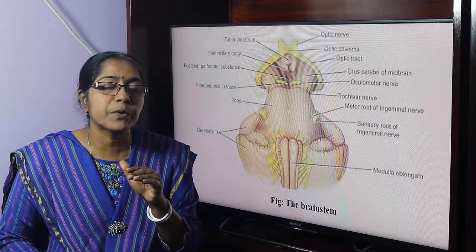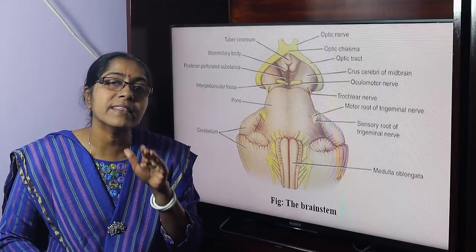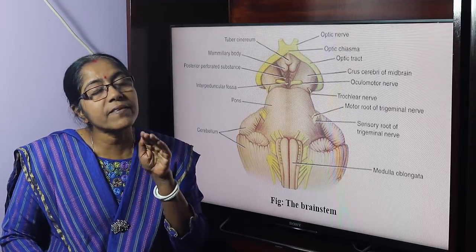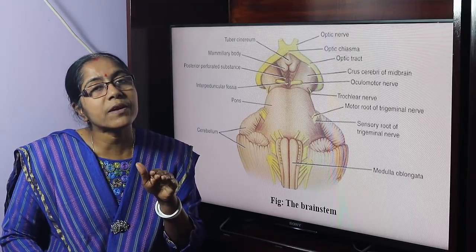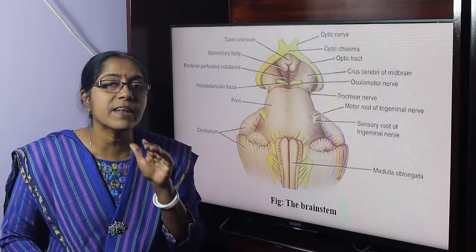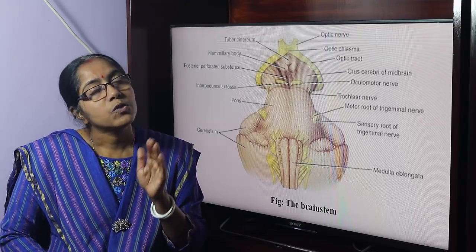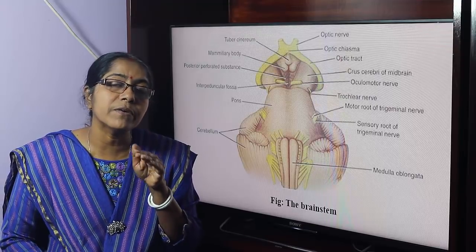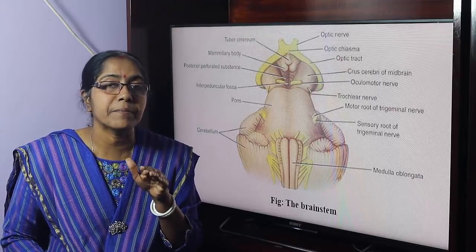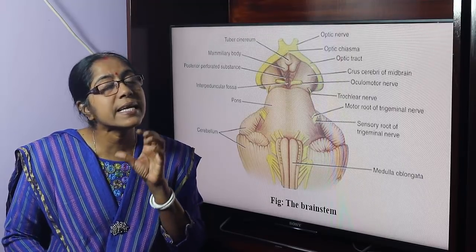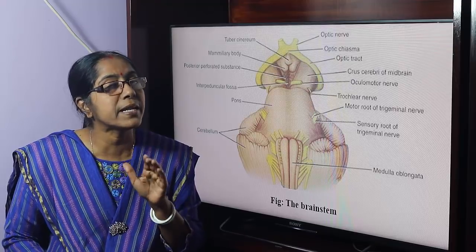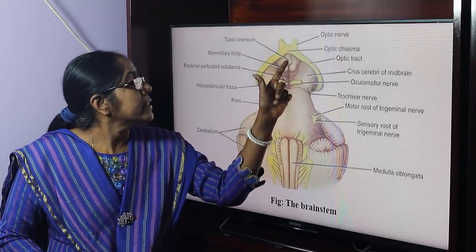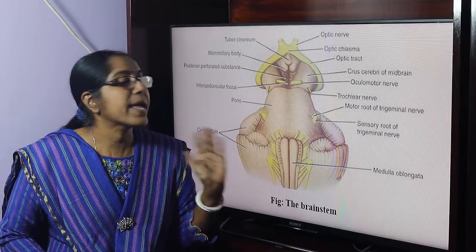We will examine the transverse section of the midbrain at the level of the superior colliculus and the inferior colliculus. The structure of the midbrain follows the same arrangement as the rest of the brain stem.